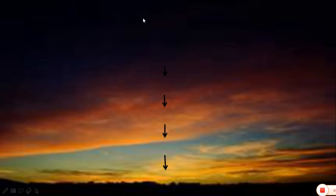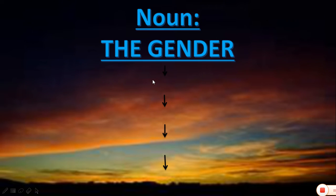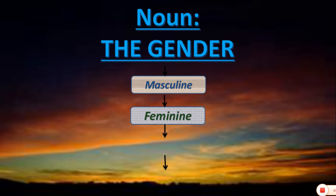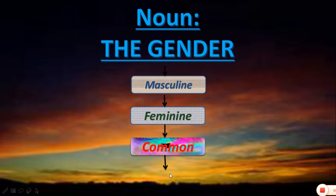There are four types of gender: first, masculine gender; second, feminine gender; third, common gender; and fourth, neuter gender.